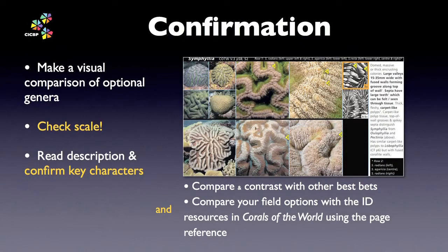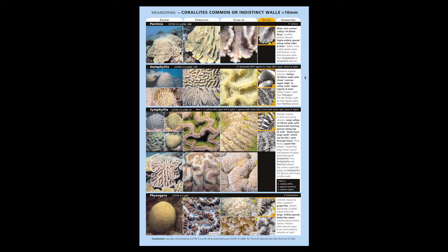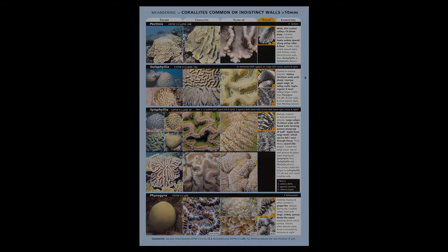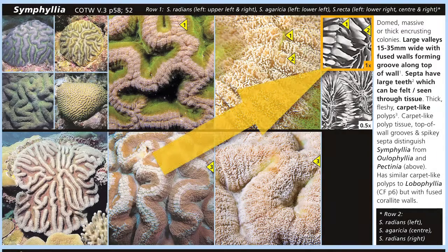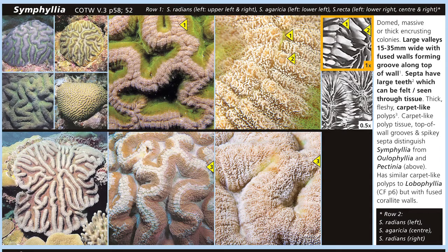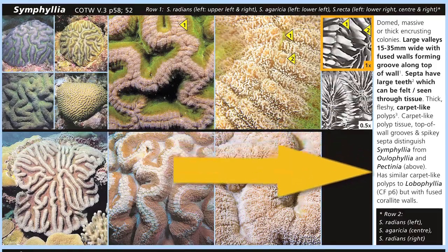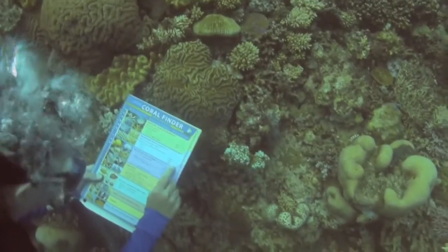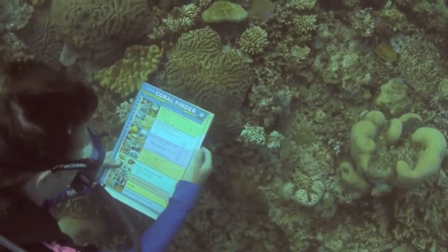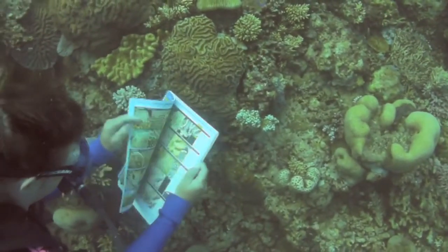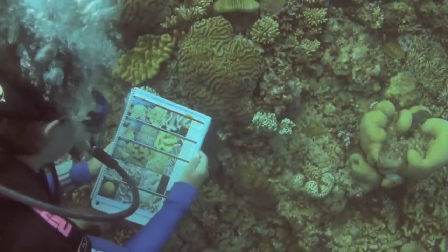Now it's time for confirmation. When working with look-alike pages, it also helps to use a simple three-step checklist. Step one: compare and contrast the genera closely, learning to see the differences between corals using the same terms from the glossary. Step two: check the scale is correct and that you haven't been seduced by the big close-up pictures. Step three: read and confirm the character description. While you are learning, it is better to come home with several genus names to follow up, rather than shoehorning a coral into a name based on your limited experience of reefs.